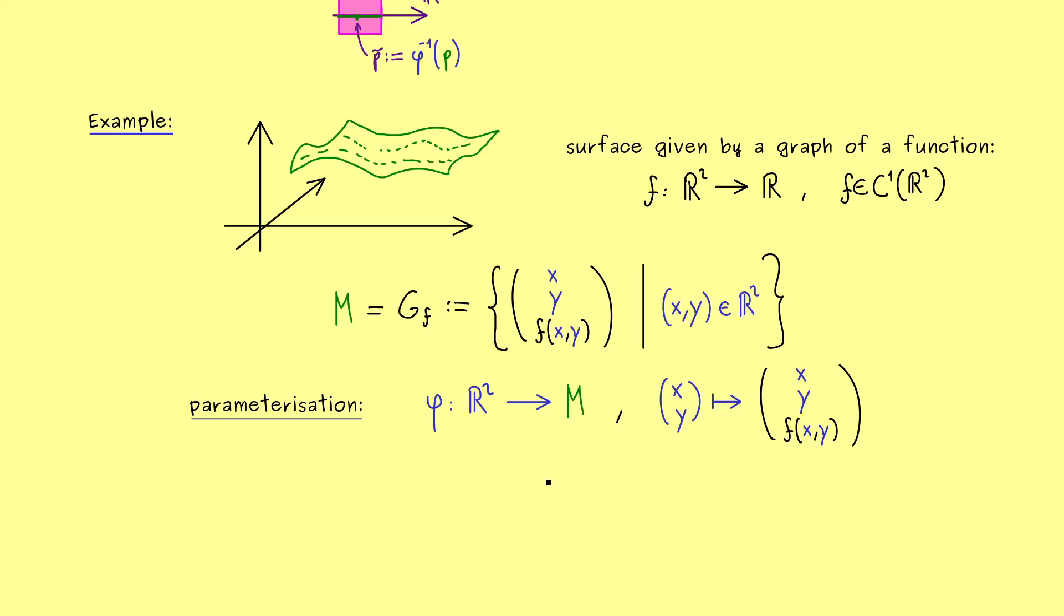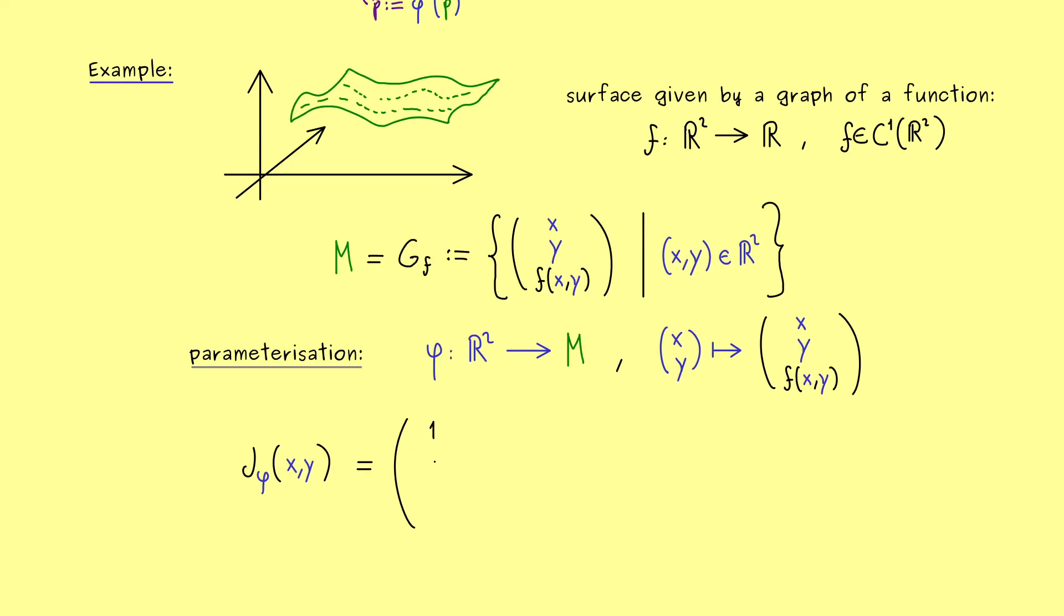So there we have our differentiable map phi. Now we can look at the Jacobian matrix. There, please note, the point p tilde now is just (x,y) - not so complicated. We can calculate partial derivatives. The first column has the partial derivative with respect to x: 1, 0, and partial derivative of f with respect to x.